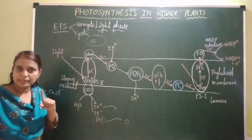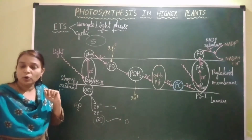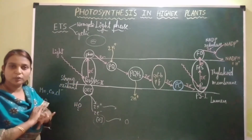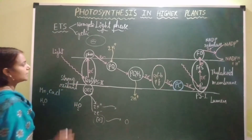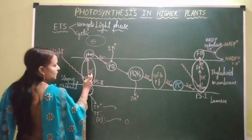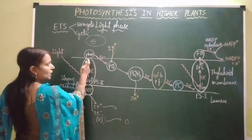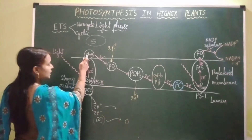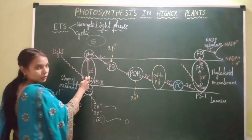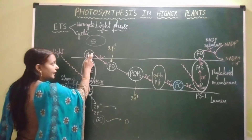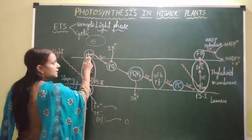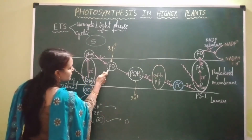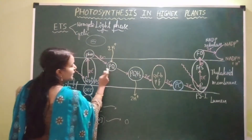This is the oxygen released as a by-product through the process of photosynthesis, which comes from water by splitting of water, but not from carbon dioxide. Now, the two electrons released from Photosystem 2 enter into Pheophytin, which is the initial electron acceptor of Photosystem 2, attached to the outer surface of the thylakoid membrane.